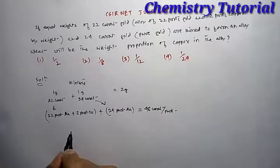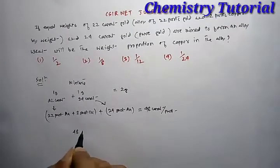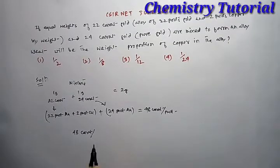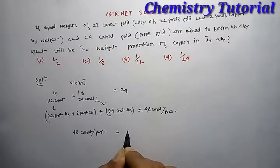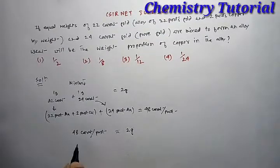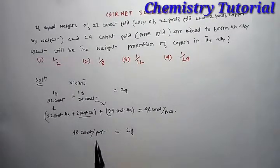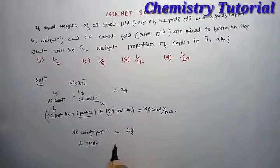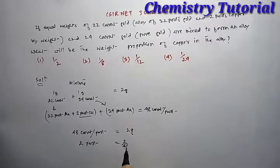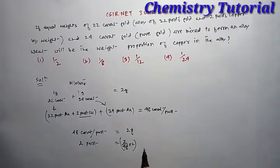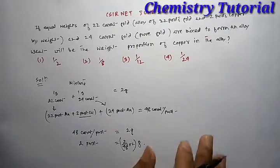Therefore, we have 48 karat or part equal to 2 grams. Therefore, copper in the mixture, the part of copper is 2 parts. Therefore, 2 parts equal to 2 by 48 into 2 grams.